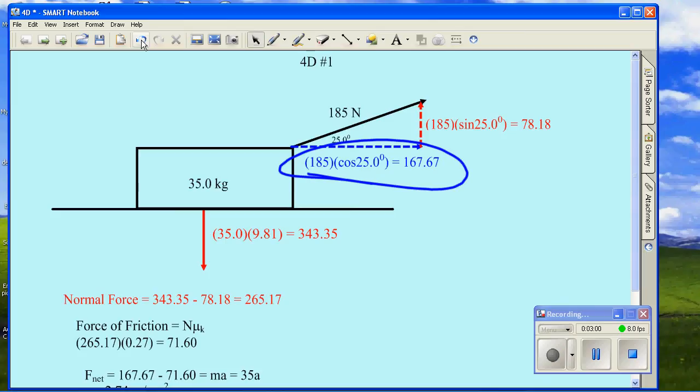So tell me, how much friction do I have to have? If I'm pulling forward at 167.67 but the net effect is zero, therefore the friction has to be 167.67. So I now know what the force of friction is if I'm not accelerating.